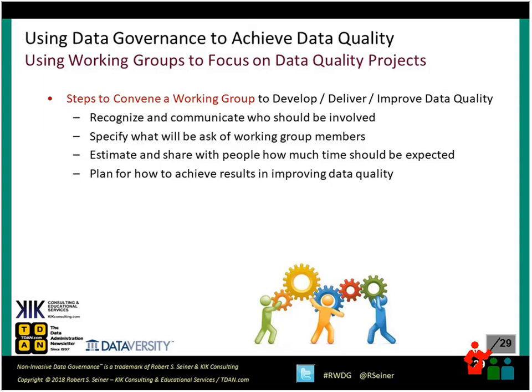Steps to convene a working group include: recognizing and communicating who needs to be involved, specifying what will be asked of participants, estimating how much of their time is expected — people won't volunteer unless directed — and developing a plan for achieving the data quality results. These may seem like common sense, but they're important considerations when bringing a working group together.